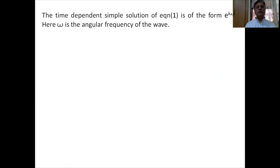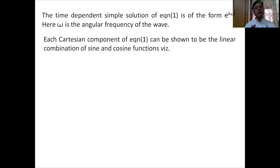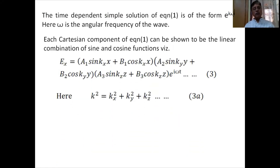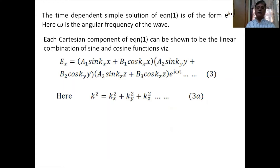The time-dependent solution of the wave equation is taken in the form e^(iωt), where ω is the angular frequency. Each Cartesian component is a linear combination of sine and cosine functions. For example, the x-component is written as: Ex = (A1 sin kx·x + B1 cos kx·x)(A2 sin ky·y + B2 cos ky·y)(A3 sin kz·z + B3 cos kz·z) e^(iωt), where k² = kx² + ky² + kz².